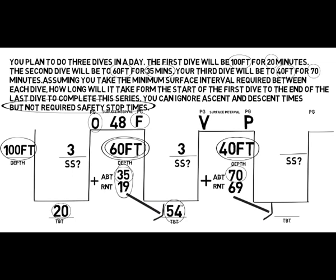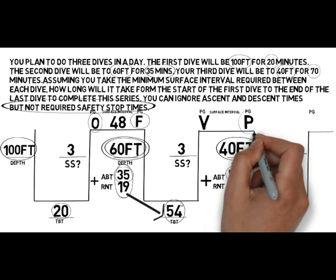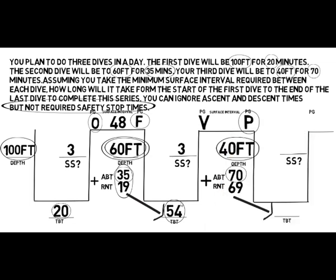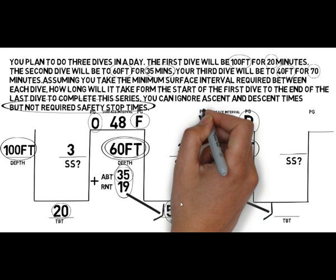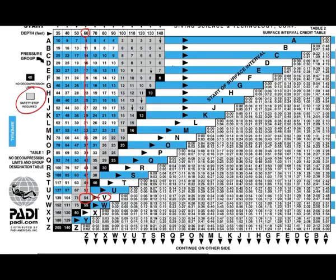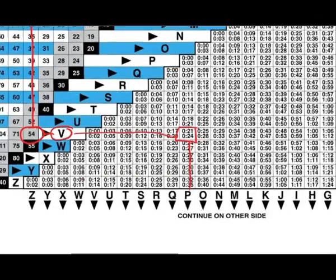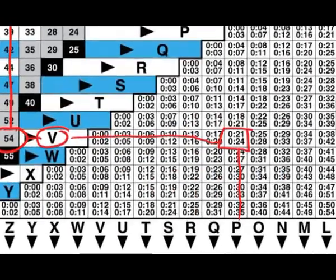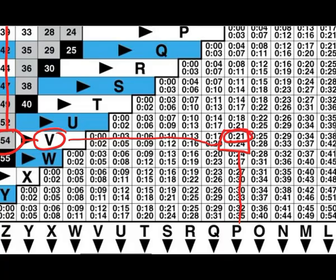We can put those two bits of information on our diagram and now find out how long our surface interval needs to be — we need to get from pressure group V to pressure group P. Using the surface interval credit table, we find how long we need to spend on the surface starting in pressure group V and ending in pressure group P. Looking at that range, the minimum amount of time is 21 minutes.